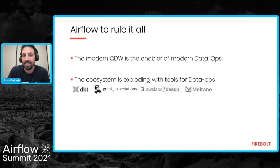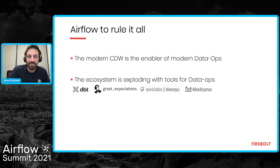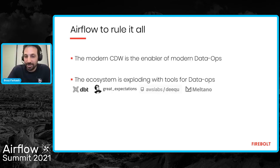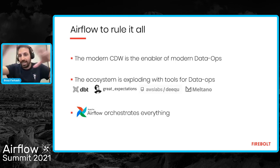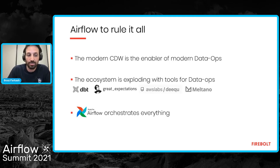Airflow remains key. Thinking of the modern cloud data warehouse as an enabler for modern DataOps, we see an amazing explosion in the data ecosystem — libraries and products all about making DataOps better. dbt is becoming a standard for ELT, libraries like Great Expectations and deequ allow data testing, Tano is an example combining many of these things together. Whatever you use, Airflow is there to orchestrate all of it. It's much easier to orchestrate with Airflow in a cloud data warehouse with modern benefits, and when you combine multiple tools your pipelines can become shorter and more SQL-oriented.